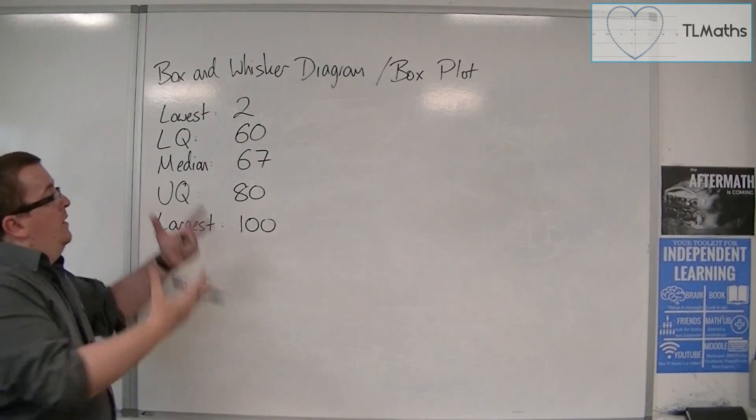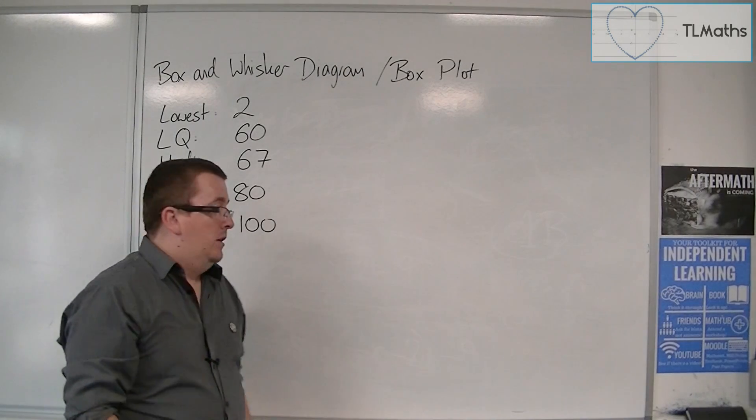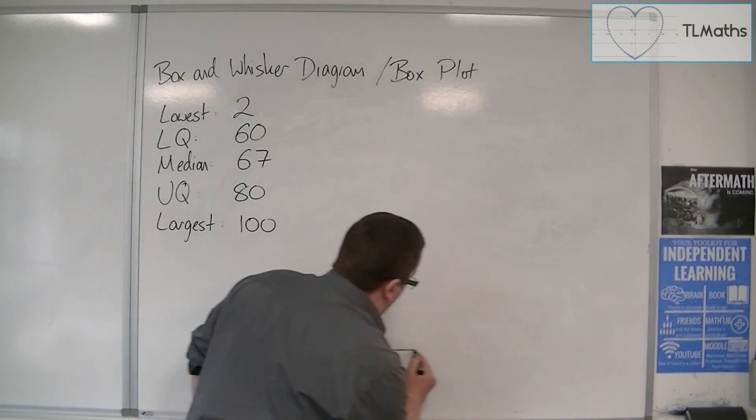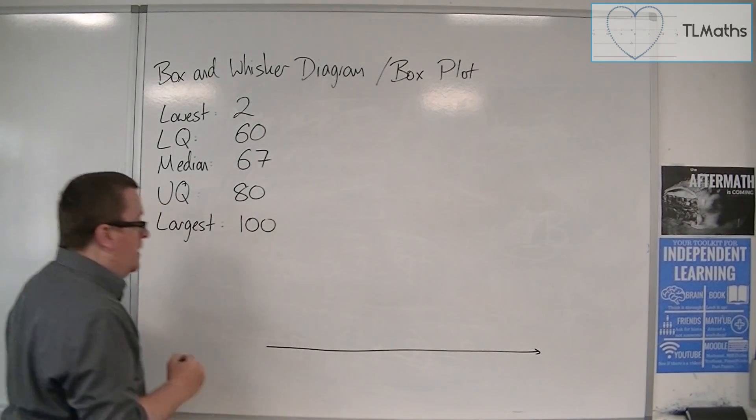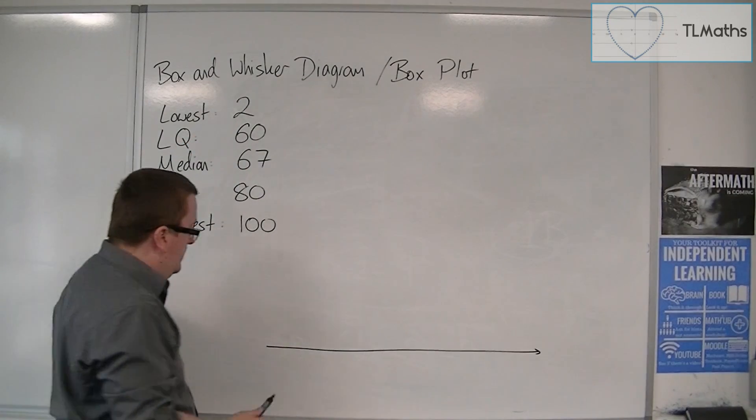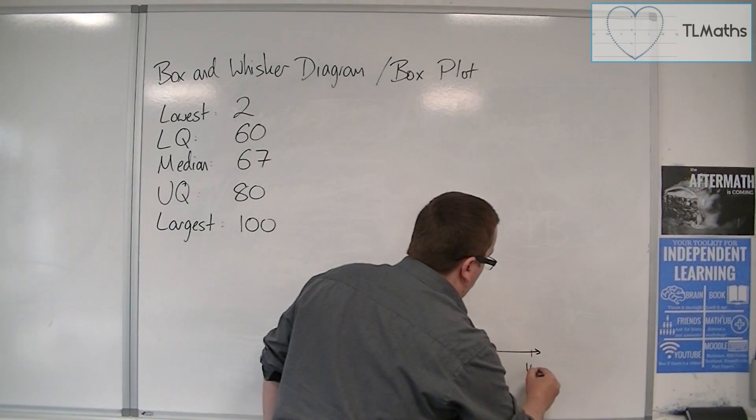And with that data you can then represent it visually by first of all drawing yourself a number line. So your number line has to go from 2 to 100 at least. So here's 0 for example, and there's 100.